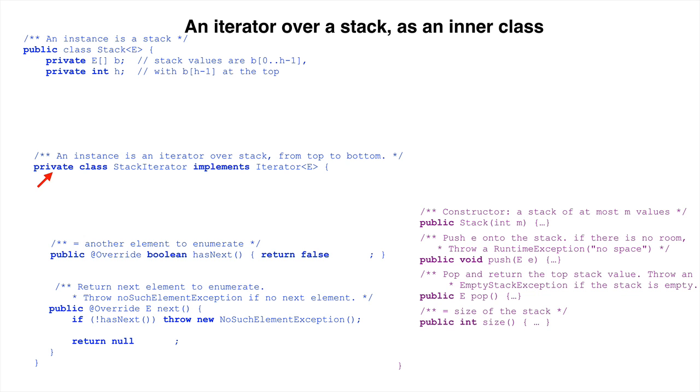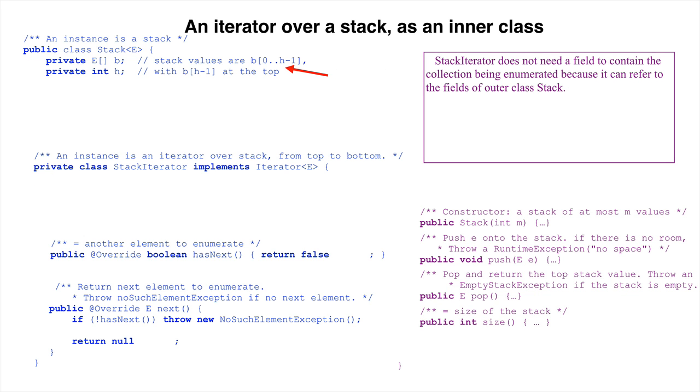We now figure out what fields are needed. First, since this is an inner class, it can refer directly to fields b and h of stack, so there is no need to add fields to stack iterator to contain the collection being enumerated.